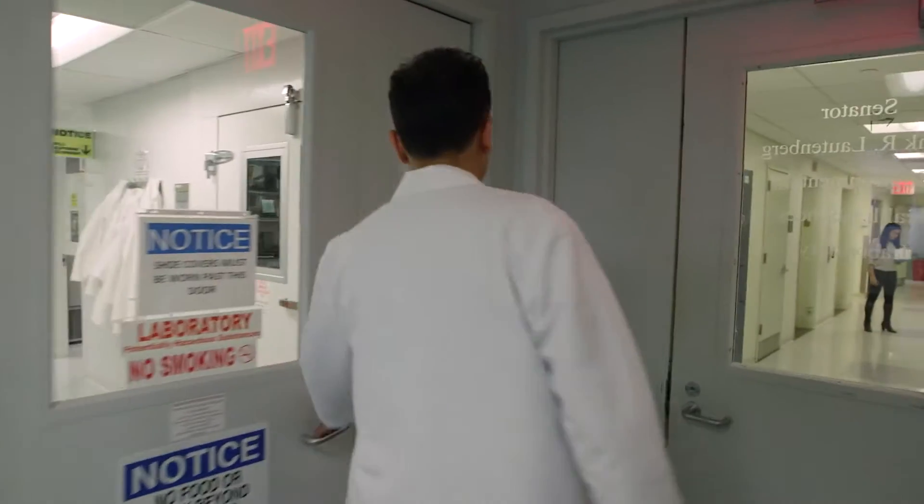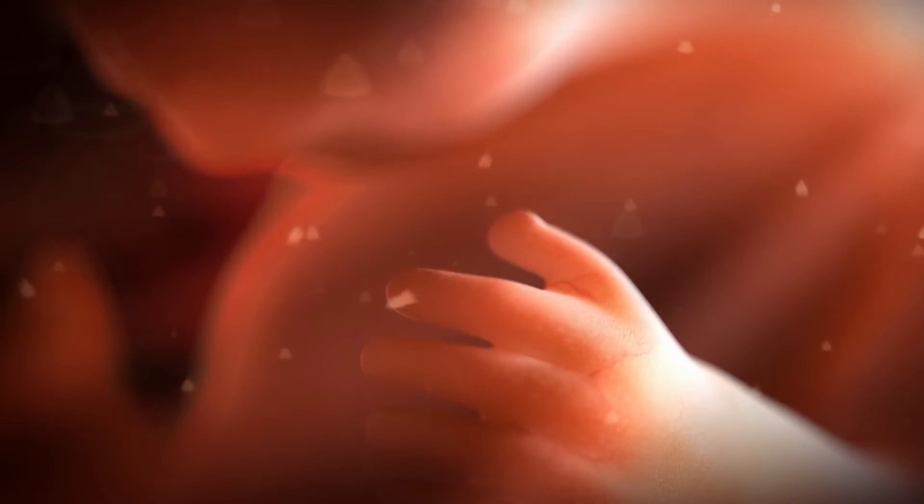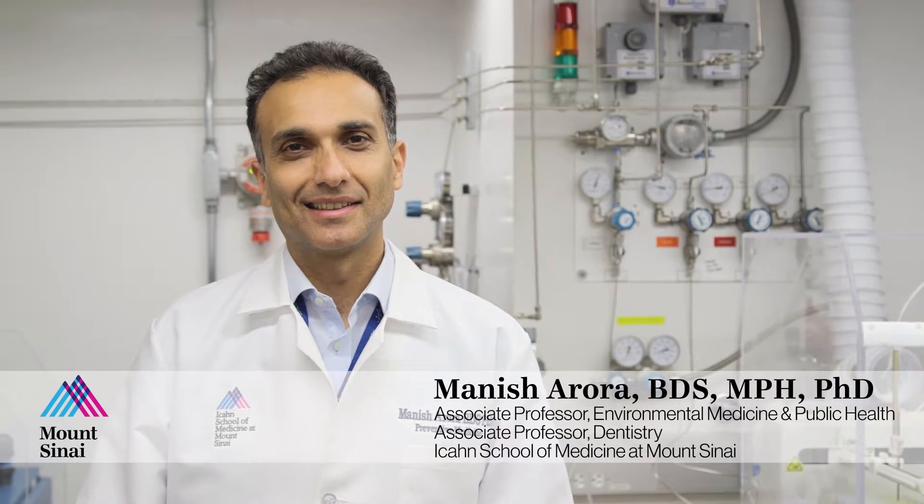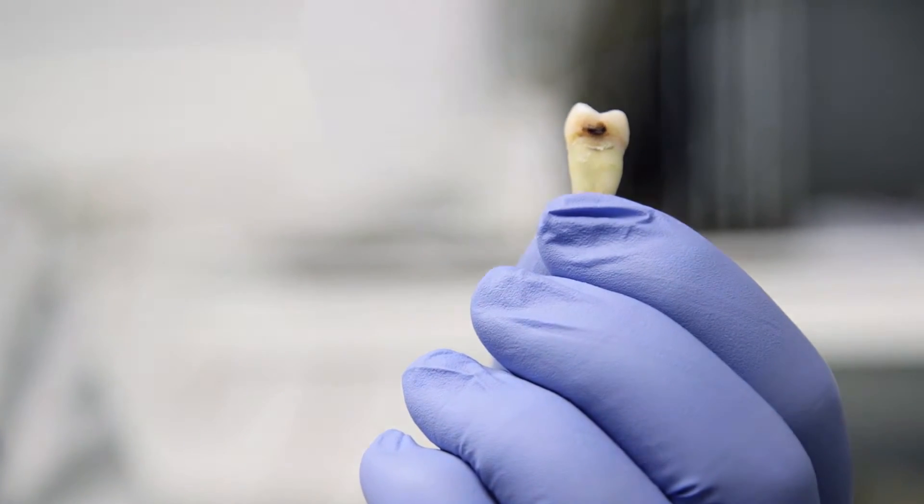My research is about understanding human life history. What happens to us soon after we are conceived and learning from that history to predict very accurately what will happen to us at the next stages of our life. Whenever we started farming we would often look at the growth rings in trees and make assumptions about weather patterns in the past. Human teeth also have growth rings.